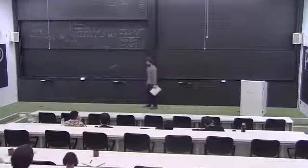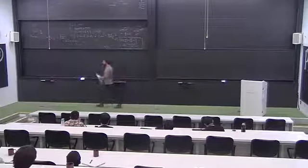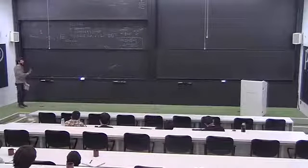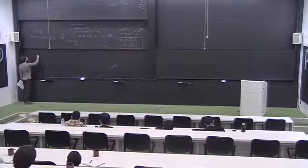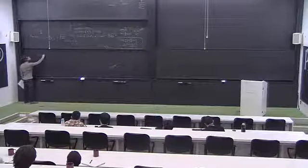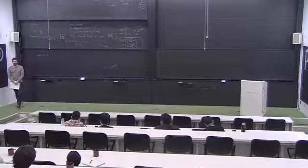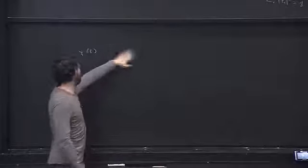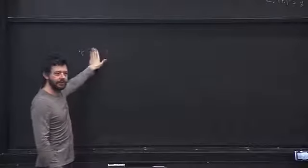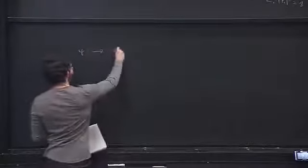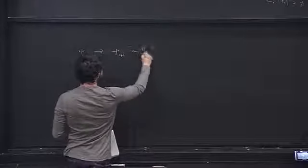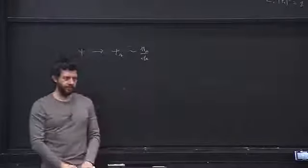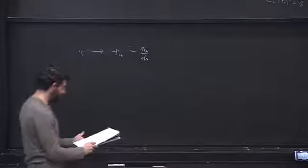This is a beautiful kinematical argument, but on its own it says nothing about Ψ(T) going to Ψ_bar. It just says that for some state Ψ, Ψ_A is similar to the identity over D_A. Now let's do the dynamics.